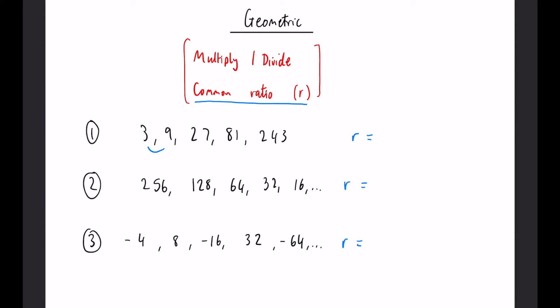So, 3 to get to 9, we multiply by 3, we multiply by 3, we multiply by 3. You get the point. So our common ratio would be 3. Simple as that.